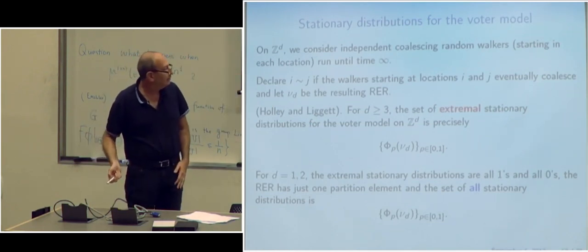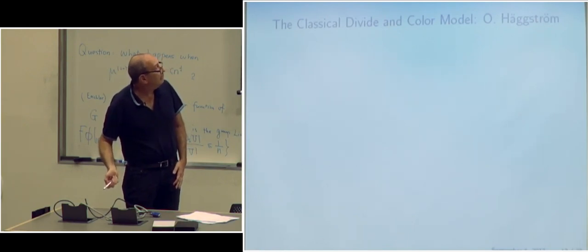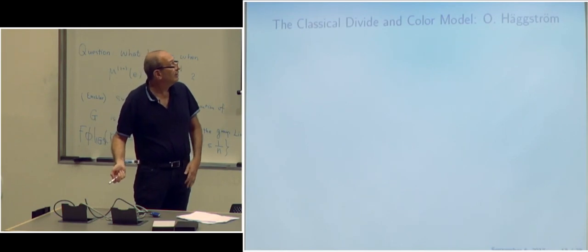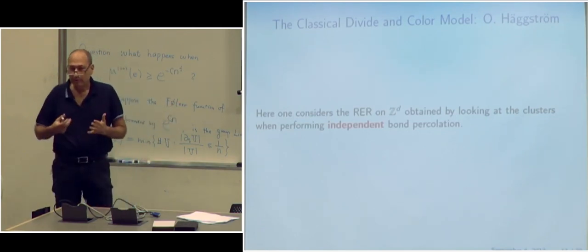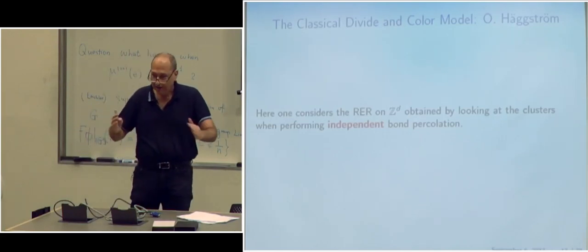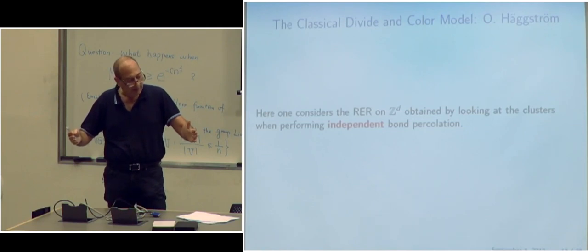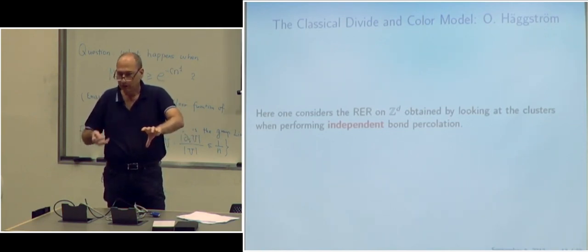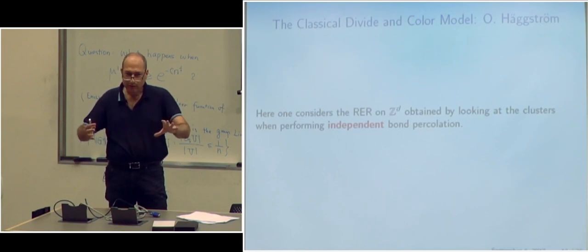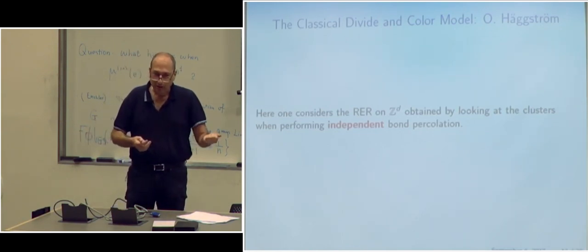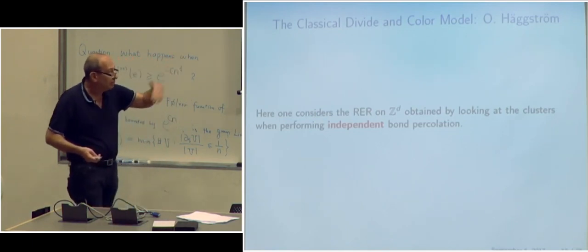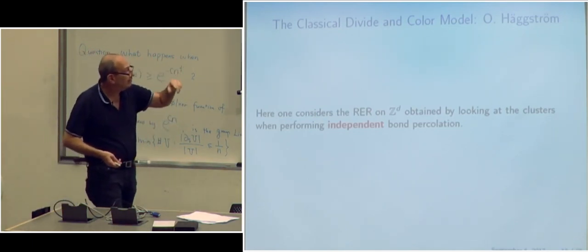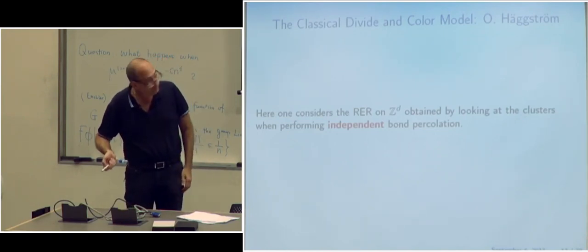There's something called the classical divide and color model — that's why our paper is called the generalized divide and color model. Häggström introduced this model in the case where the random equivalence relation comes from ordinary IID percolation on the D-dimensional lattice: you look at the corresponding components as your partitions and then color those. He studied this thinking about what happens if you do a simpler percolation model instead of the FK model that gives the Ising model, and there are a number of results and papers in this area.